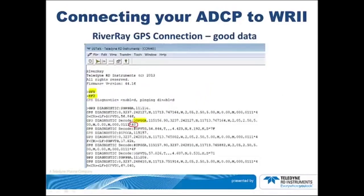In this example, we have good data. You can see the SF8 command, which sets the baud rate, and then the SF2 command, which turns the diagnostics on. Looking further down the screen, you will see the $GPGGA message highlighted in yellow, followed by the latitude and longitude, and finally the checksum at the end — star 40. This is an example of a good GPGGA message. Just below it, you can see a good VTG message, and so on.